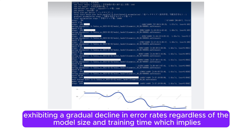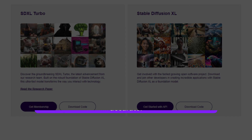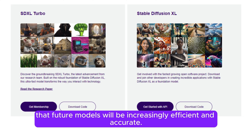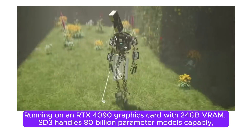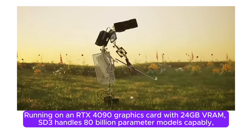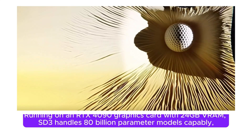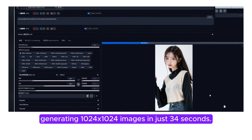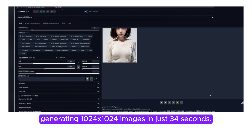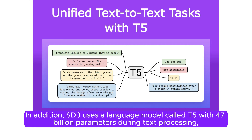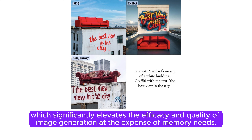SD3 exhibits a gradual decline in error rates regardless of model size and training time, implying that future models will be increasingly efficient and accurate. Running on an RTX 4090 graphics card with 24 gigabytes of RAM, SD3 handles 8 billion parameter models capably, generating 1024 by 1024 images in just 34 seconds. Additionally, SD3 uses a language model called T5 with 4.7 billion parameters during text processing, which significantly elevates the efficacy and quality of image generation at the expense of memory needs.